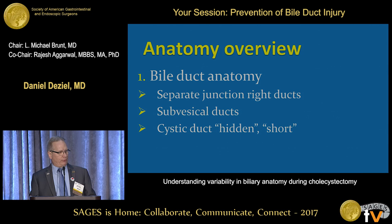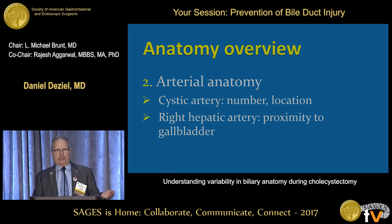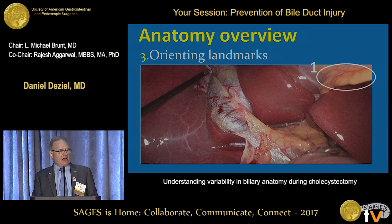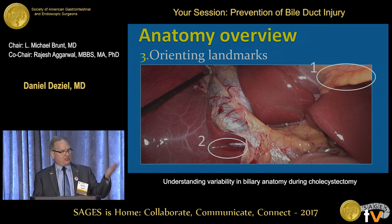In summary, we reviewed bile duct anatomy that increases the risk of injury — namely separate right ducts, sub-vesicle ducts, and cystic ducts that are hidden or short. We looked at arterial variations that increase the risk of vascular injury: variations in the cystic artery, right hepatic arteries that are close to the gallbladder. And landmarks: falciform — stay well to the patient's right of it; Rouvière's sulcus — stay anterior to it; the epicholedochal plexus and the duodenum — stay away from them. Thank you.